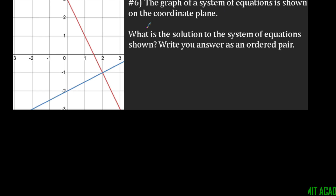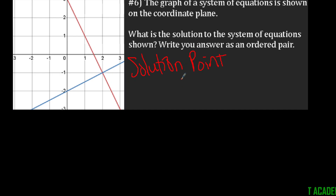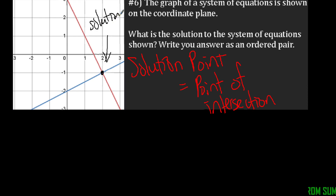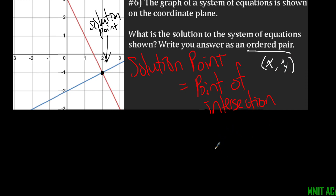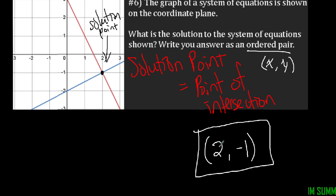For number six, the graph of a system of equations is shown on the coordinate plane. What is the solution to the system of equations? Write your answer as an ordered pair. Wherever the lines intersect is the solution point — it's the point of intersection, meaning where do they cross and meet. We're going to say that point right there is our solution, and we have to write it as an ordered pair — an x value and a y value in parentheses. Our point of intersection is going to be (2, -1). Make sure you have your x value first, then your y value.